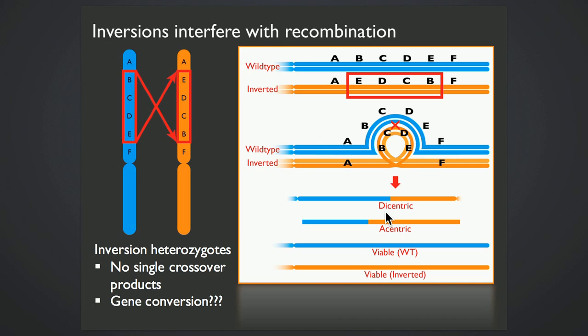Now, you can get double crossover products, though this happens at a diminished rate compared to what we would predict. We understand this fairly well. What we don't understand is to what extent gene conversion can occur within these inverted regions, and that's exactly what I'm trying to address.